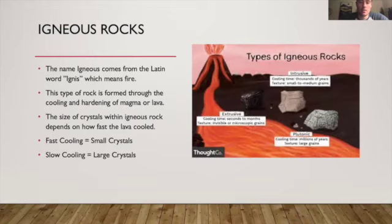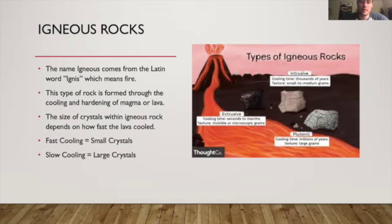If the lava cools really fast, you're going to have really small crystals. And if the lava takes a long time to cool down, you're going to have large crystals. For example, in Hawaii, if an eruption takes place and that lava drops into the water, it's going to cool down really quickly. Whereas lava that never quite makes it to the Earth's surface and is still underground — all that heat is insulated — it's going to cool down eventually, but much more slowly, producing those big, large crystals.